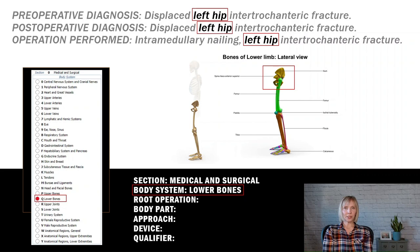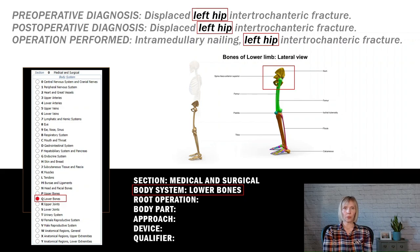Next, we have enough information in the title of our report to select our body system. The title tells us that this procedure was performed on the left hip, which is a lower bone. We will confirm this in the body of the op report as well.